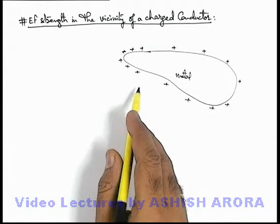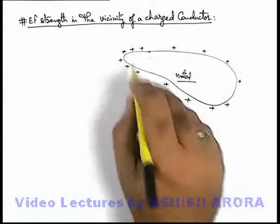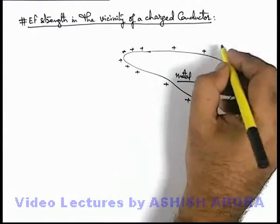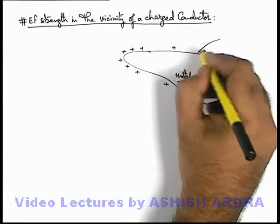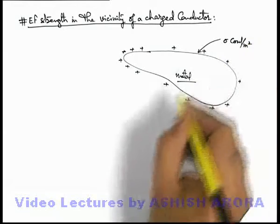And if some external charges are present the distribution will get affected. So if there is a metal body which has some distribution and on its surface at a point, say surface charge density is sigma coulomb per meter square.